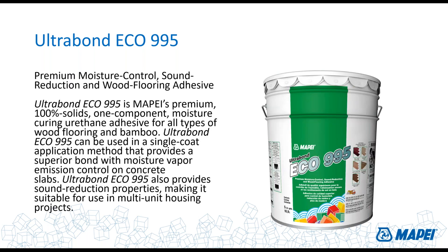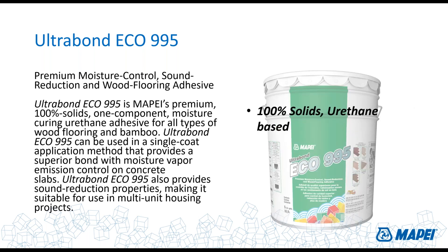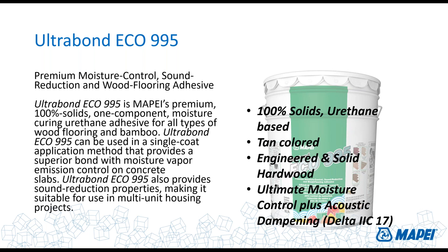Another flagship product is Ultrabond Eco 995: our 3-in-1 premium moisture control adhesive. It's 100% solids, urethane-based, tan colored so it doesn't show through, designed for engineered, solid, and exotic hardwoods including bamboo. Provides ultimate moisture control plus acoustic dampening. Acoustic testing data is available on the 995 technical data sheet, and copies of test data are available to help build a specification.